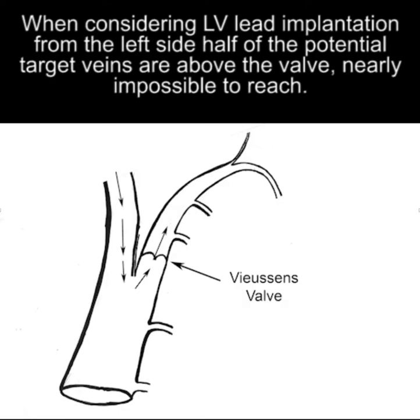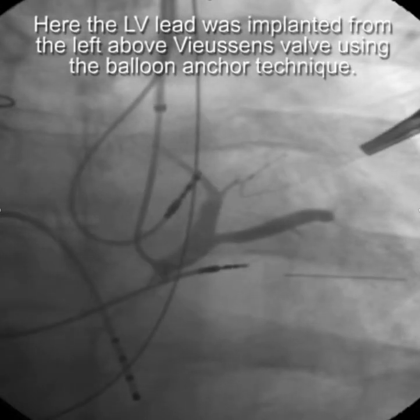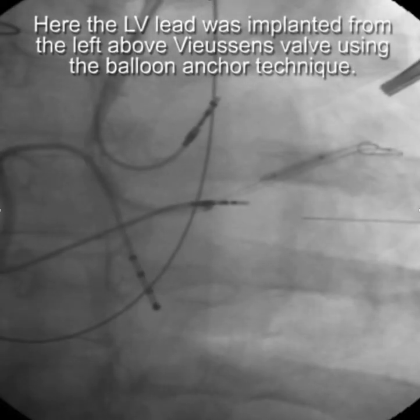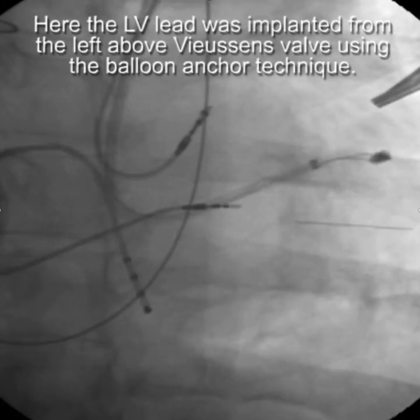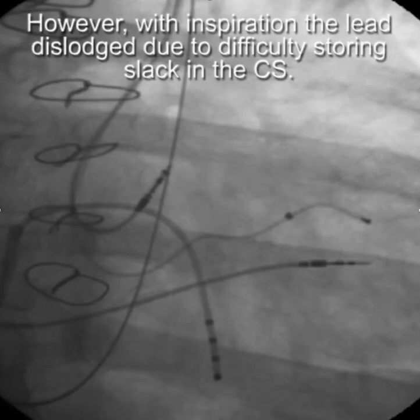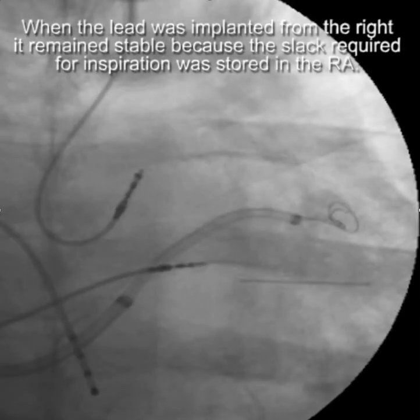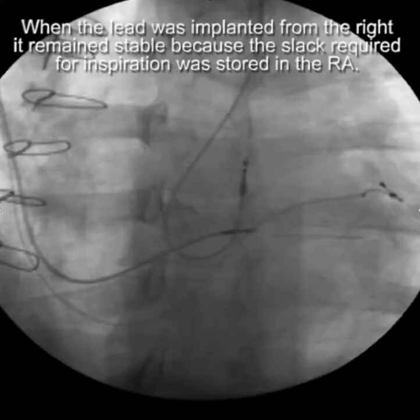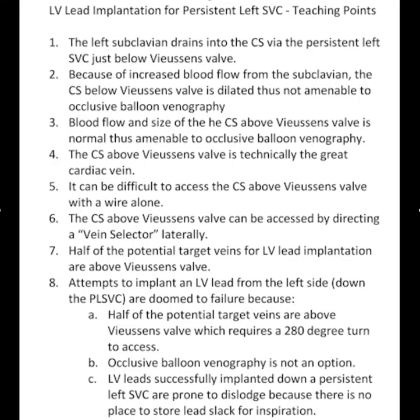When considering LV lead implantation from the left side, half of the target veins are above the valve, which can be nearly impossible to reach. Here, the lead was implanted from the left above Eustachian valve using the balloon anchoring technique. However, with inspiration, the lead dislodged due to difficulty storing slack in the coronary sinus. When the lead was implanted from the right side, it remained stable because the slack required for inspiration could be stored in the right atrium.